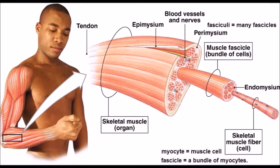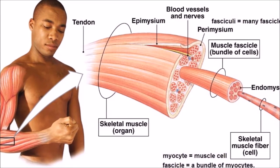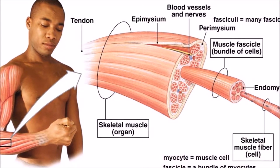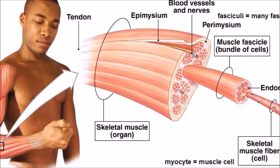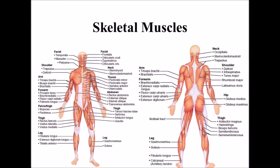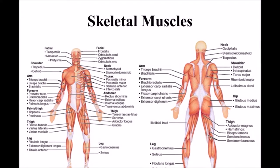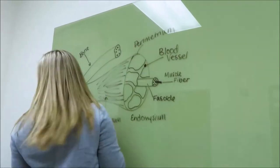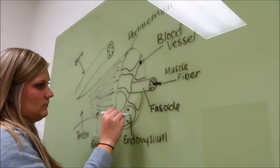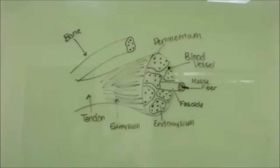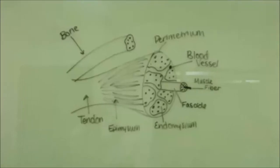The skeletal muscle is considered an organ of the muscular system. Each organ or muscle consists of skeletal muscle tissue, connective tissue, nerve tissue, and blood or vascular tissue. Skeletal muscles vary considerably in size, shape, and arrangement of fibers. Some skeletal muscles are broad in shape and some are narrow. Each skeletal muscle fiber is a single cylindrical muscle cell. An individual skeletal muscle may be made up of hundreds or even thousands of muscle fibers bundled together and wrapped in a connective tissue covering.